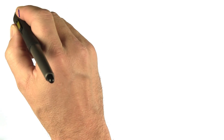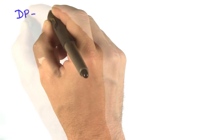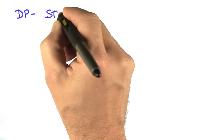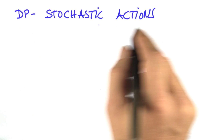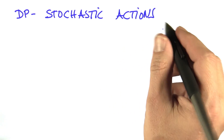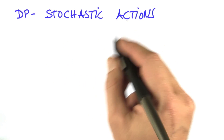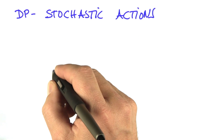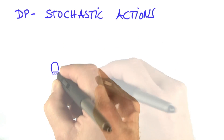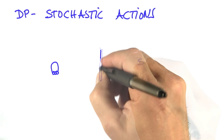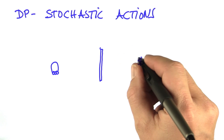Let me talk about dynamic programming with stochastic actions. At the end of this assignment, you'll be able to program this. The motivation to study this is as follows: suppose we have a robot, an obstacle, and a goal state.